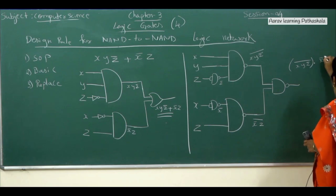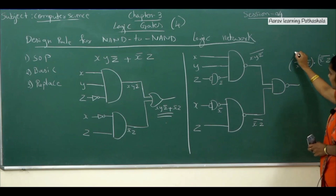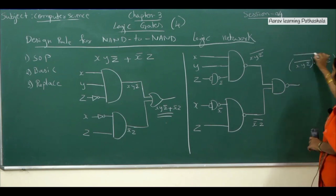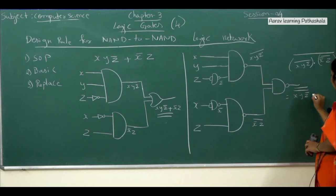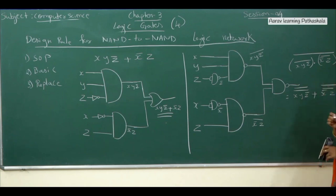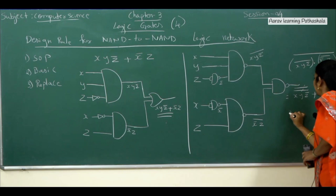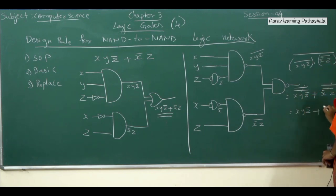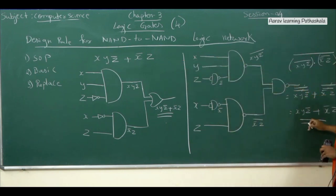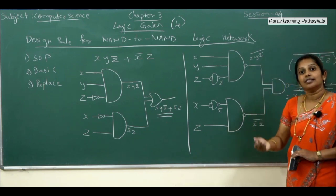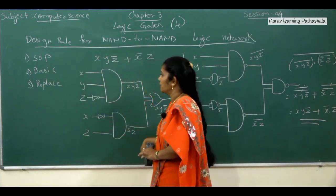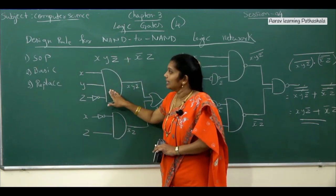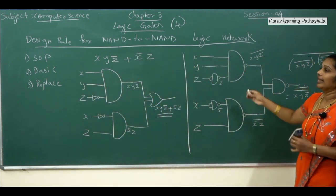To verify: apply De Morgan's theorem. We have X Y Z̄ whole bar as the first output and X̄ Z whole bar as the second output, combined through a NAND gate — so the final expression is X Y Z̄ whole bar dot X̄ Z whole bar, all with a whole bar. Applying De Morgan's theorem, replace dot with plus: X Y Z̄ double bar plus X̄ Z double bar. The double bars cancel by the involution law, giving the final output X Y Z̄ plus X̄ Z — exactly the original expression.